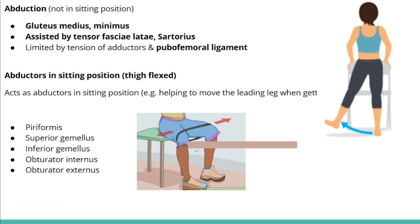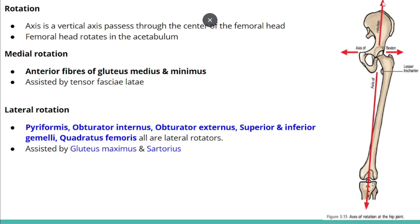Abduction in the sitting position — where the thigh is flexed, such as getting out of a car — is performed by piriformis, superior and inferior gemellus, and obturator internus and externus. Rotation happens around the vertical axis passing through the center of the femoral head. For medial rotation, the anterior fibers of gluteus medius and minimus assist, aided by tensor fasciae latae. For lateral rotation, the small muscles of the gluteal region help — piriformis, obturator internus, gemellus, obturator externus, and quadratus femoris — assisted by gluteus maximus and sartorius.